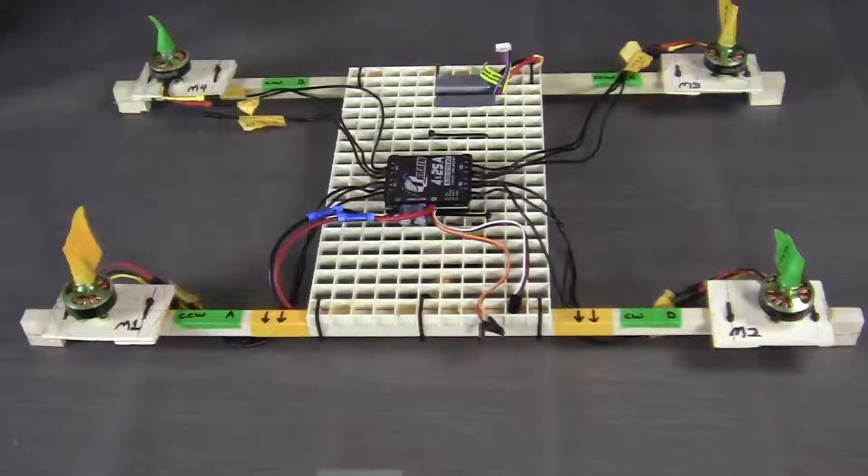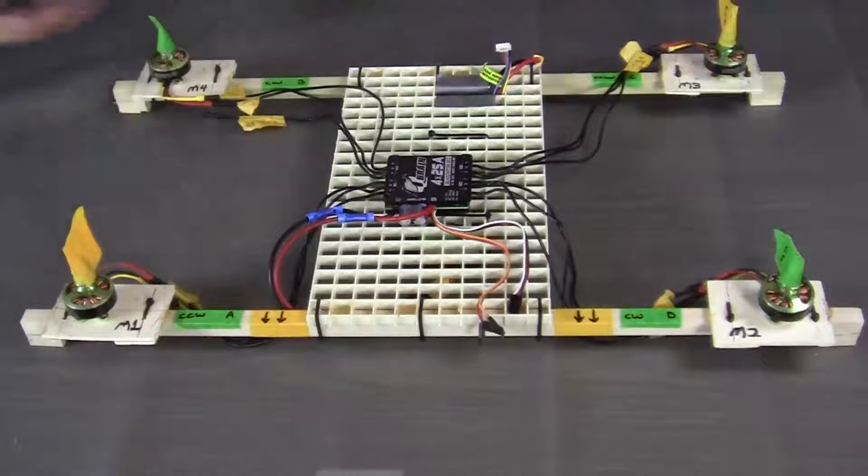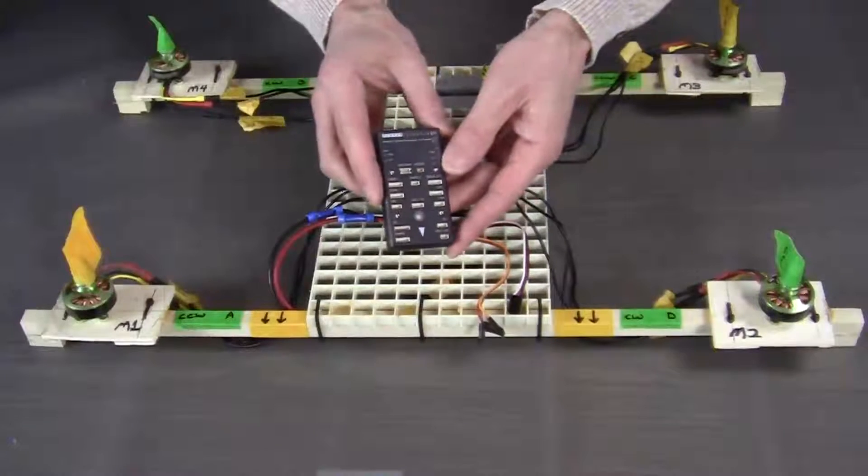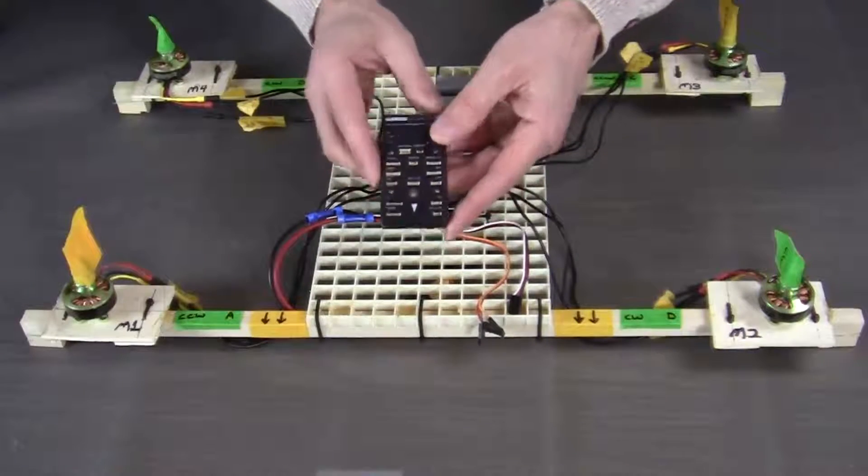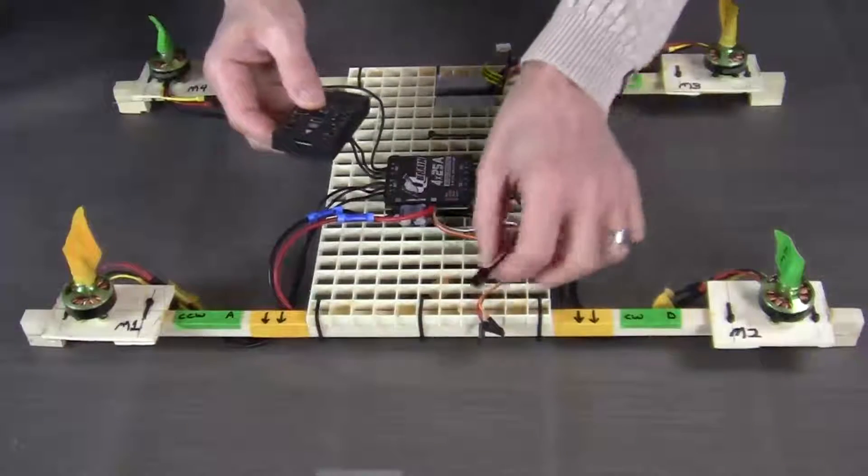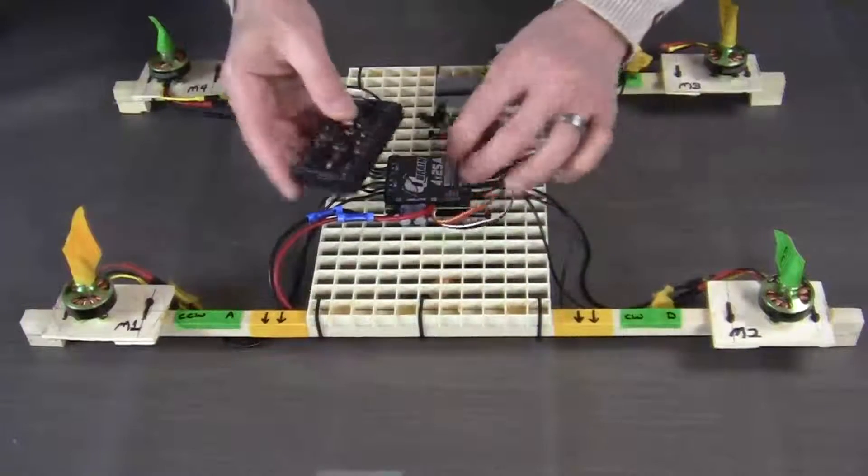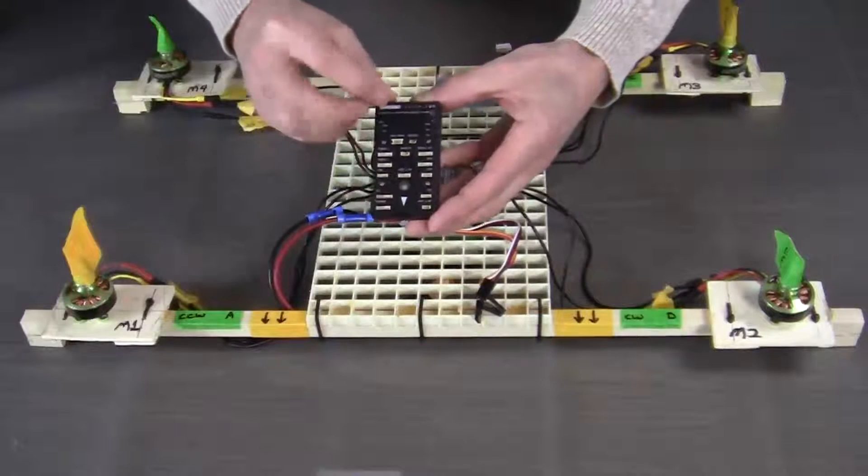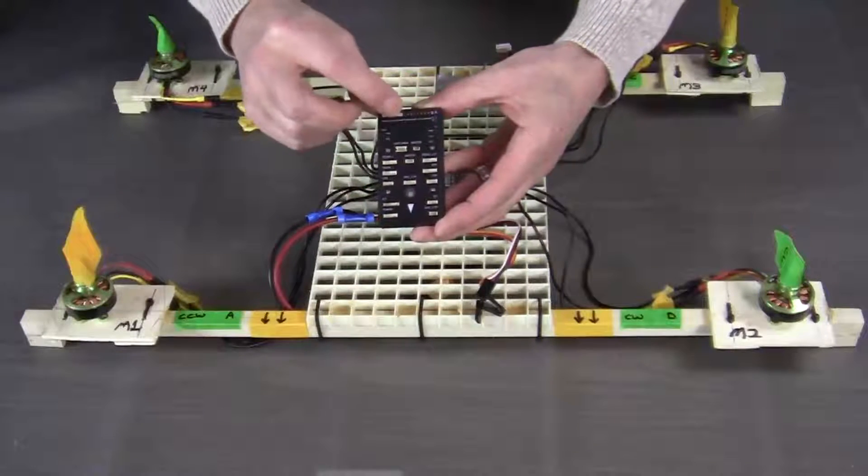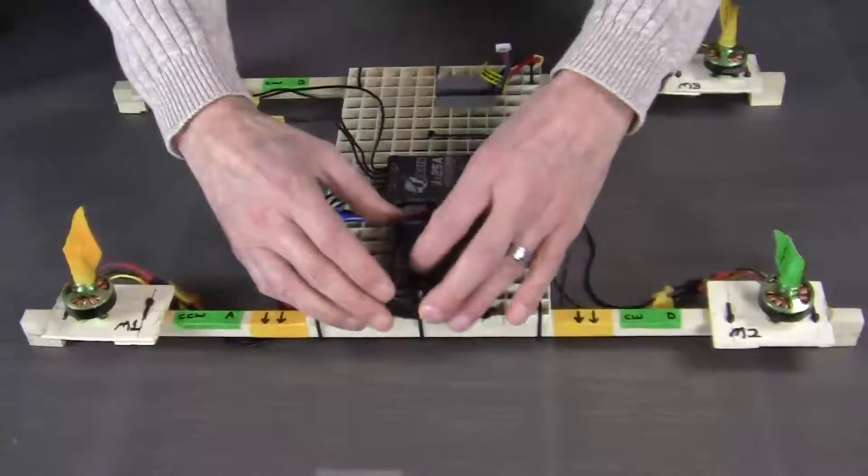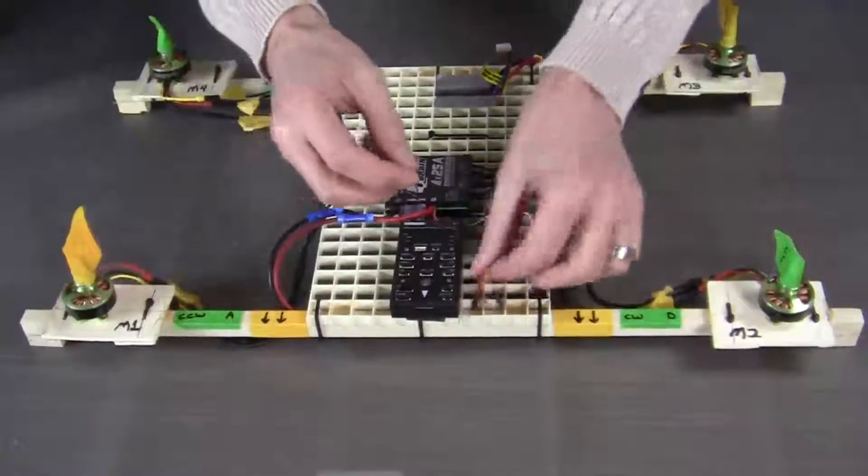Now the next thing that we want to do is connect our Pixhawk flight controller to the QBrain. So we're going to take the signal wires from the QBrain and we are going to mount them or connect them to the main out group of ports in this sequence.